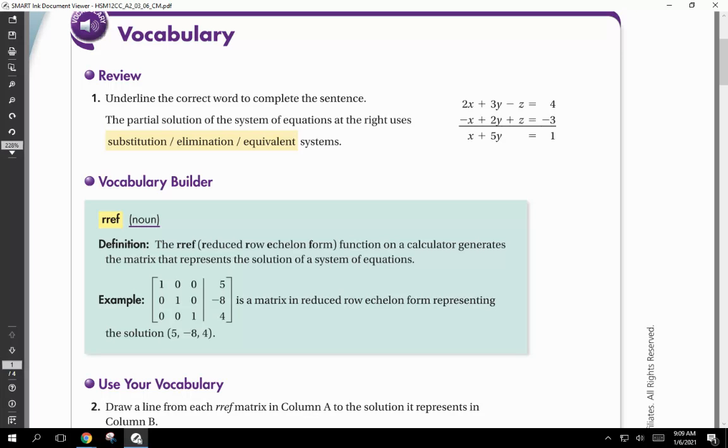Underline the correct word to complete the sentence. The partial solution of the system of equations at the right uses substitution, elimination, or equivalent systems. Well, here you can see that they are eliminating something. What are they eliminating? The Zs. So when you eliminate something, it's called the elimination system. And that's a great quiz question that we could have on our quiz tomorrow.